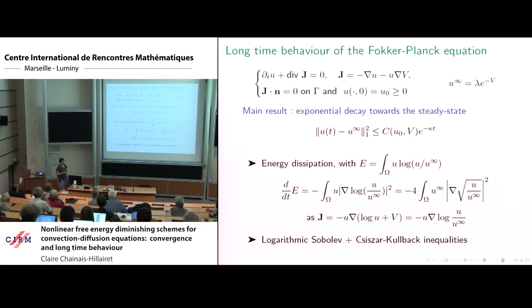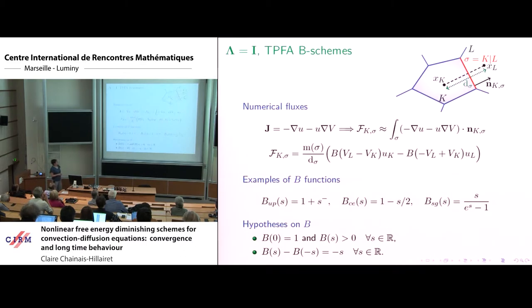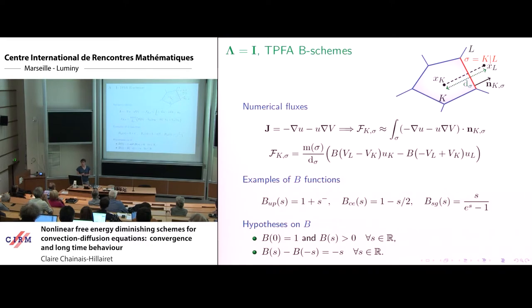To show the exponential decay towards the steady state, we use the fact that energy is dissipated and then use some functional inequalities. This proof works for the case of Neumann boundary conditions and is almost the same for Dirichlet boundary conditions at thermal equilibrium, using a Poincaré inequality at the end. Now I want to show that with some numerical schemes we can prove the same behavior, and I start with TPFA and TPFA-B schemes, which are linear schemes.